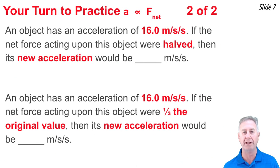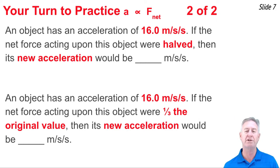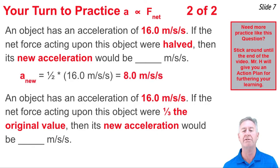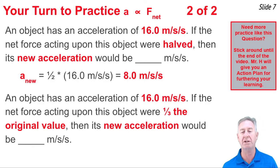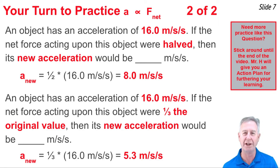Here are two more chances to practice. Pause the video, answer the questions, and then press play. In the first question, the F_net is halved, so we take the 16 meters per second squared acceleration and halve it, giving us 8 meters per second squared. In the second question, the F_net is one-third of the original value, so we take one-third of 16 meters per second squared, which comes out to 5.3 meters per second squared. By whatever factor the F_net is changed, the acceleration is changed by the same factor.